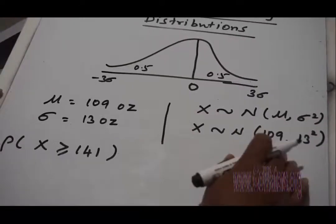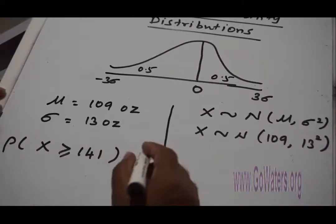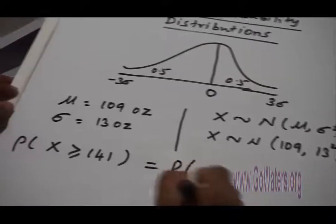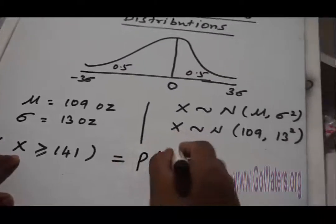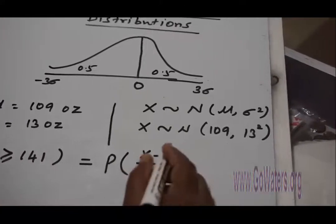Now you cannot solve this problem directly, so I'm going to standardize this. How am I going to standardize? This equals the probability of X minus μ divided by σ.